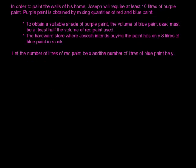Let's look at this example. In order to paint the walls of his home, Joseph will require at least 10 litres of purple paint. The purple paint is obtained by mixing quantities of red and blue paint. To obtain a suitable shade of purple paint, the volume of blue paint used must be at least half the volume of red paint used. The hardware store where Joseph intends to buy the paint has only 8 litres of blue paint. Let the number of litres of red paint be X and the number of litres of blue paint be Y.